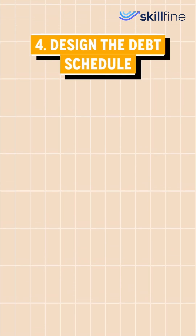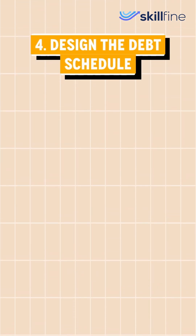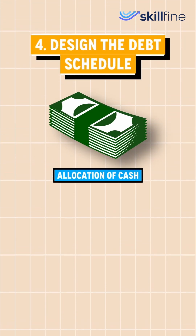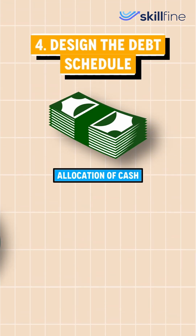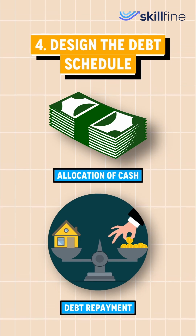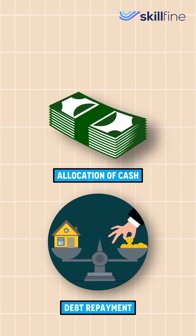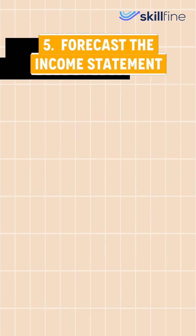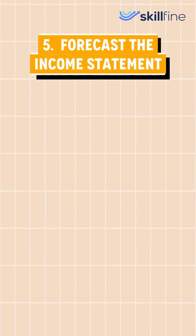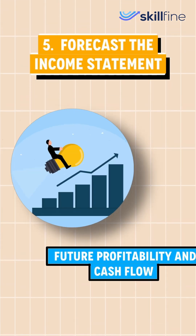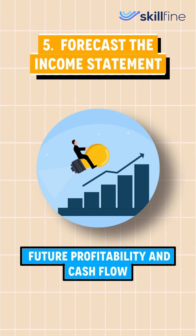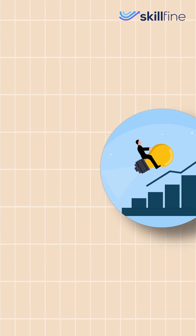The fourth step is to design the debt schedule, which determines the allocation of cash flows and the timeline for debt repayment. This is followed by forecasting the income statement, which gives us a clear view of the company's future profitability and cash flow.